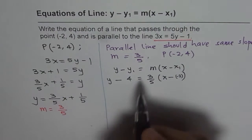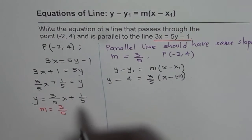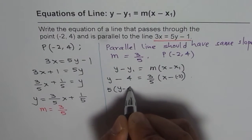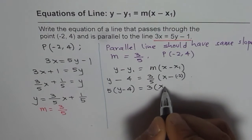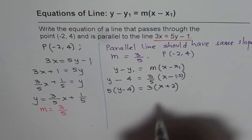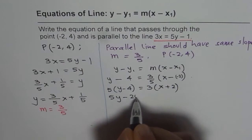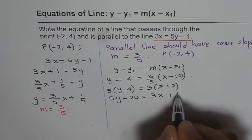And now to solve this, we'll multiply by 5 on both the sides. So we get 5 times y minus 4 equals to 3 times x minus minus becomes plus, x plus 2. Let's expand. 5y minus 20 equals to 3x plus 6.